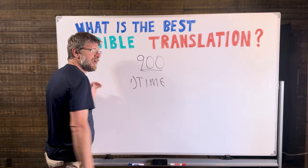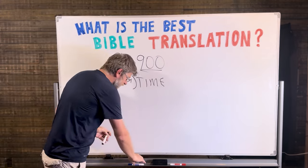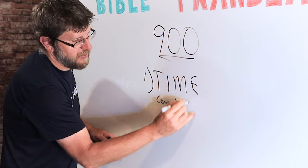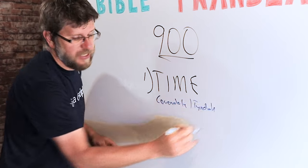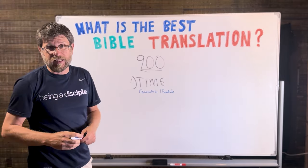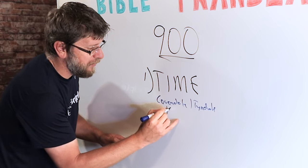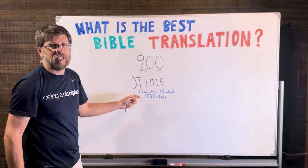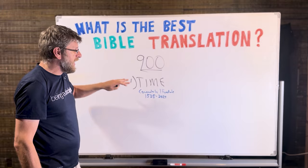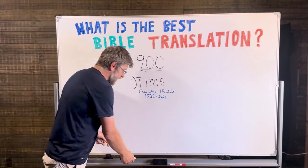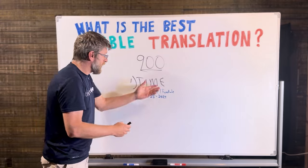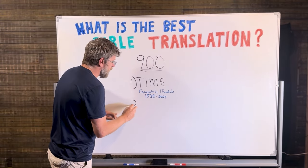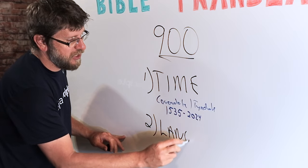There has been a lot of time since Coverdale and Tyndale first translated the Bible into English. They translated the very first copy around 1535, almost 500 years ago. A lot has happened in those 500 years, everything from new archaeological discoveries and finding of new manuscripts, but also a significant thing has happened, and that is language has changed.